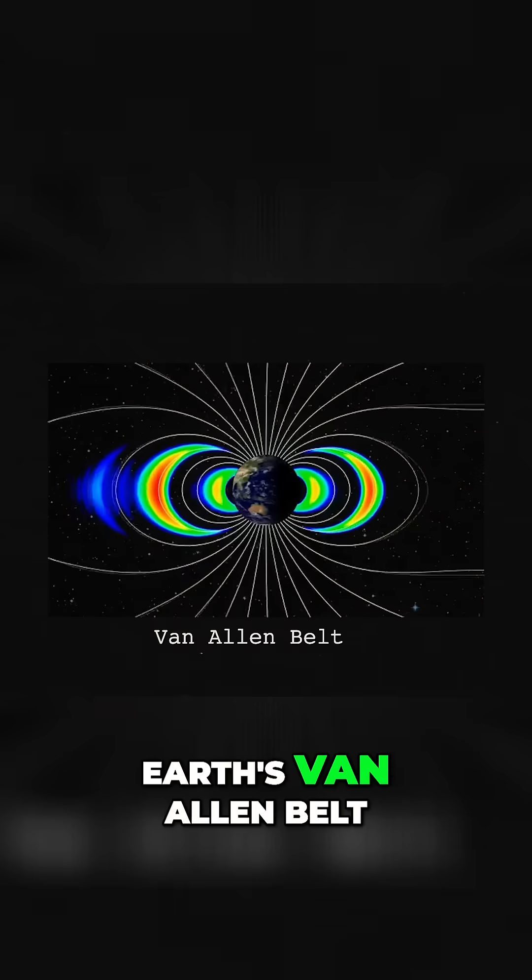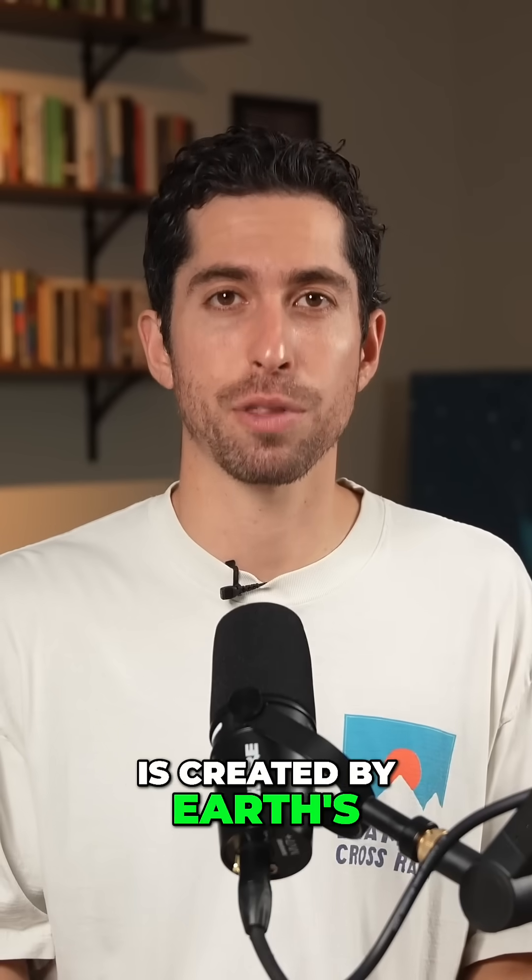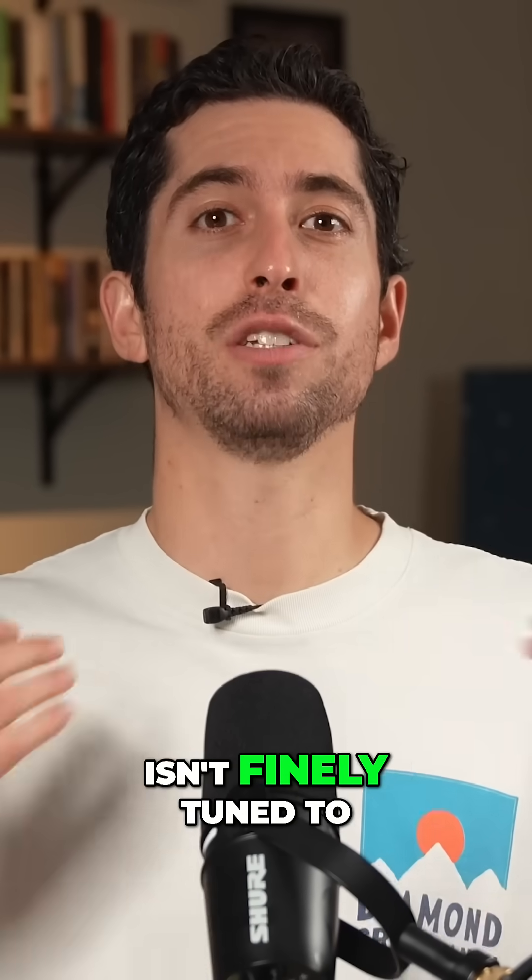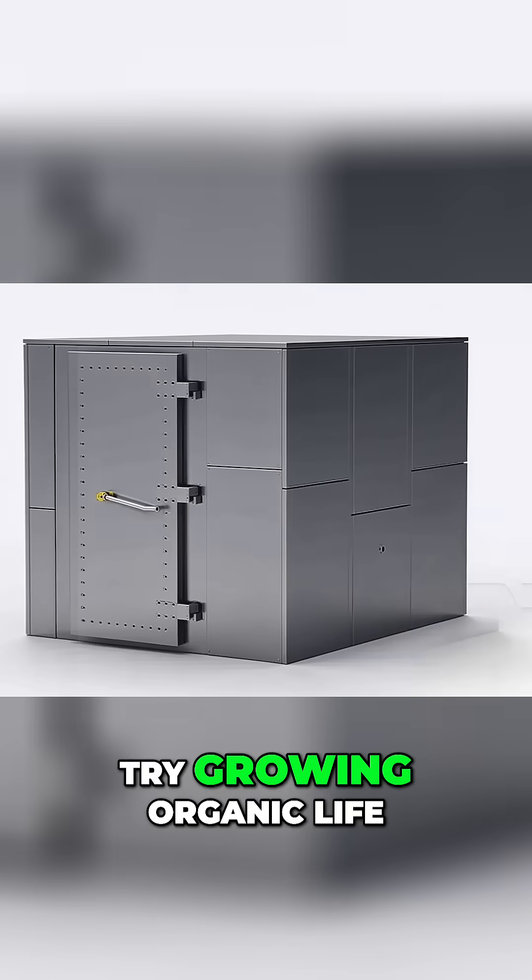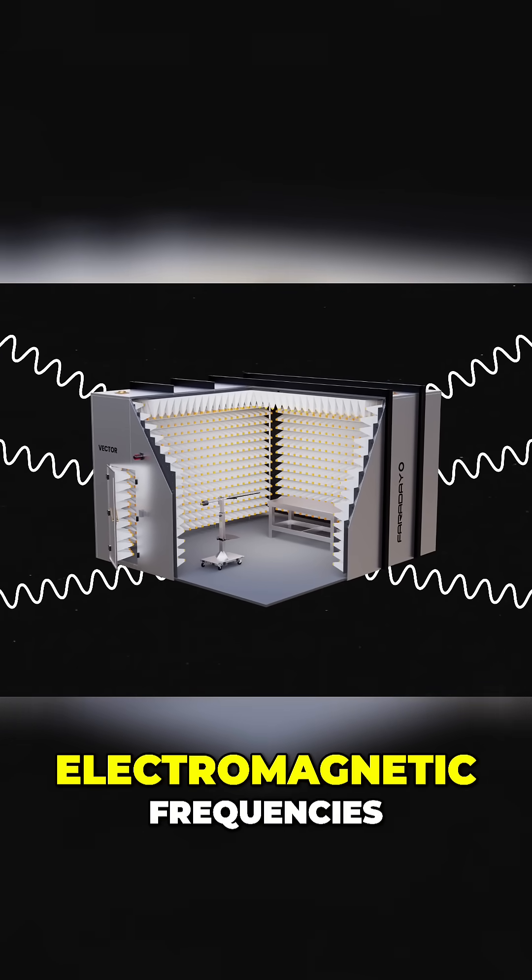And what about the Earth's Van Allen Belt? It protects us from cosmic radiation that would wipe life off the planet. The Van Allen Belt is created by Earth's magnetic field. And if you think the Earth's magnetic field isn't finely tuned to support life, try growing organic life in a Faraday chamber, removing the Earth's natural electromagnetic frequencies.